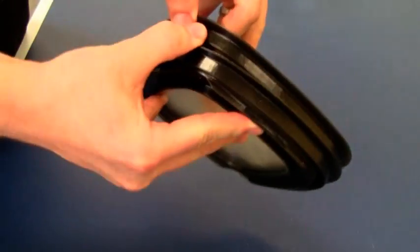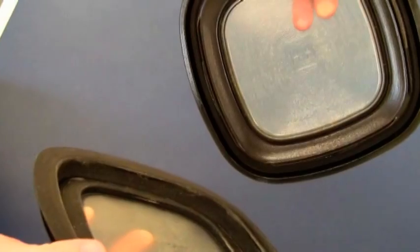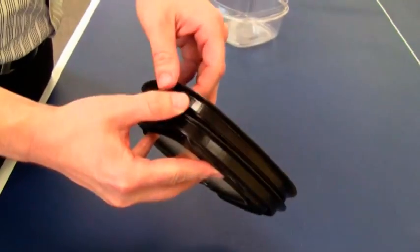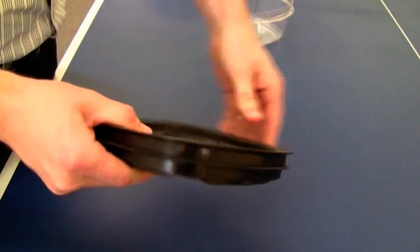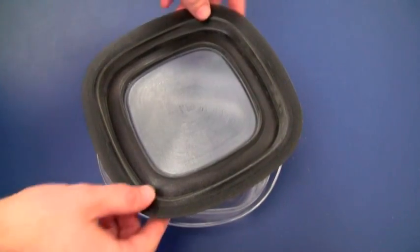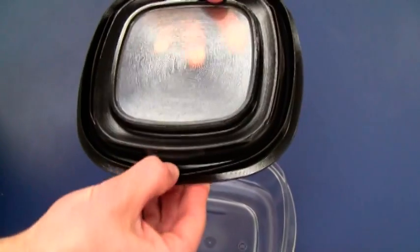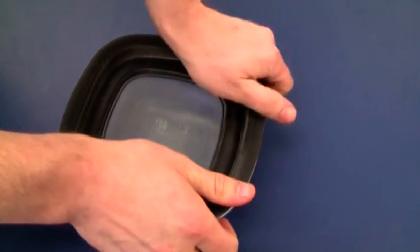The dimensional accuracy of the Connex 3D printer also allowed for functional testing of the snap feature found in the top and bottom of the lid design. These features allow the lids to stack and lock together as well as for the top of the lid to lock to the bottom of the container.